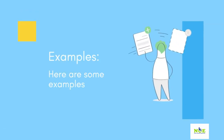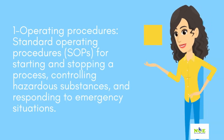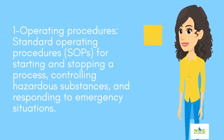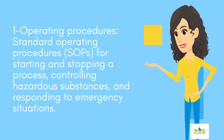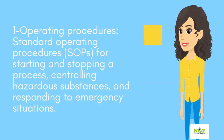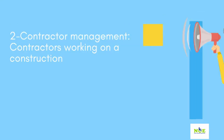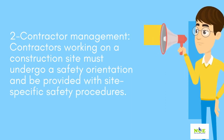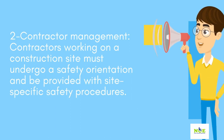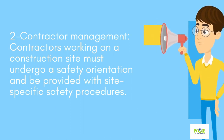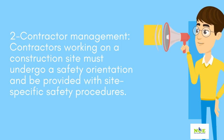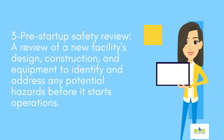Here are some examples. 1. Operating procedures: standard operating procedures (SOPs) for starting and stopping a process, controlling hazardous substances, and responding to emergency situations. 2. Contractor management: contractors working on a construction site must undergo a safety orientation and be provided with site-specific safety procedures. 3. Pre-startup safety review: a review of a new facility's design, construction, and equipment to identify and address any potential hazards before it starts operations.